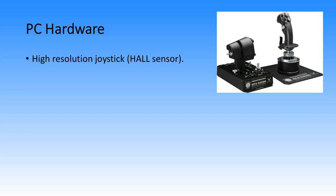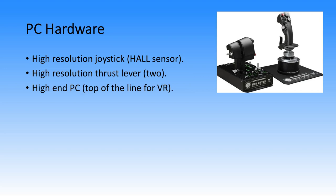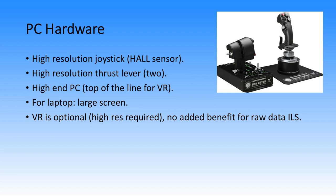For PC hardware, you will need a high-resolution joystick, preferably with a Hall sensor — a magnetic sensor — because if the resolution is too low (as most cheap joysticks and throttle levers have), it will not be good enough to fly precision ILS. For the throttle lever, you will need two levers if your plane has two engines. You will need a reasonably high-end PC. If you want to use VR, you'll need a top-of-the-line PC. If you use a laptop, you want a relatively large screen so you can read the instruments.